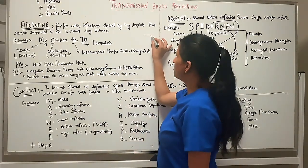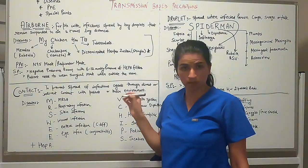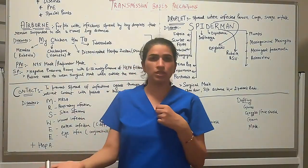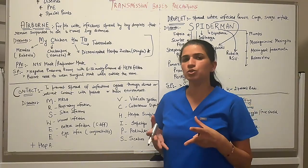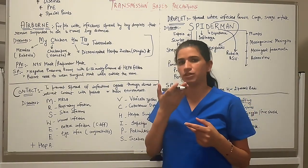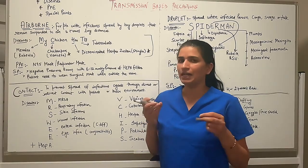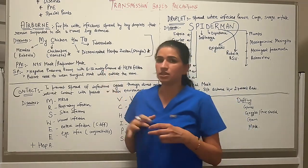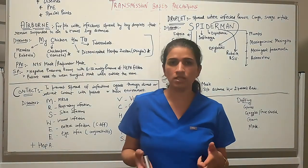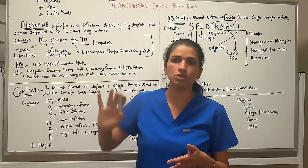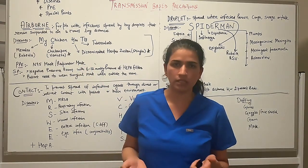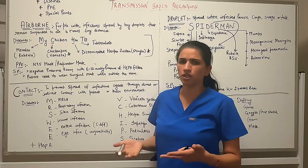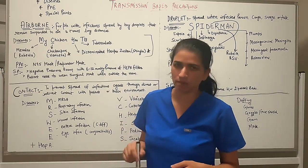There are only four conditions in the airborne list, so it's easy to remember with this mnemonic. For PPE, the nurse needs to wear a special type of mask called an N95 mask, also known as a respirator mask. You also use standard precautions as needed depending on the procedure or care task. If you're just walking in to check on the patient, you only need to wear the N95 mask.